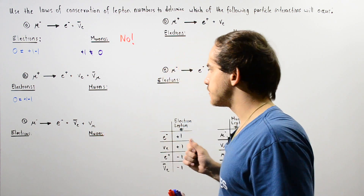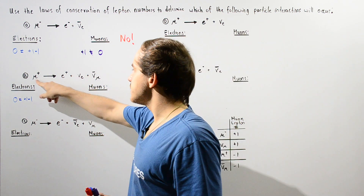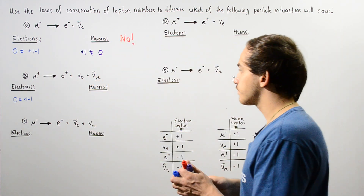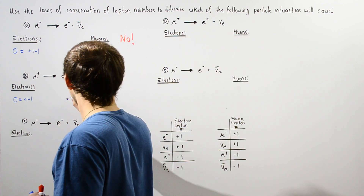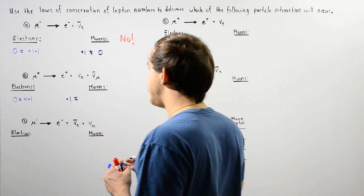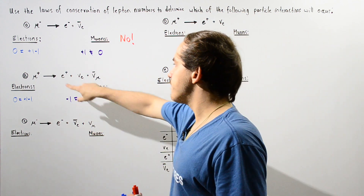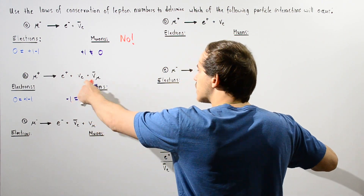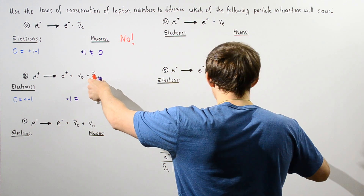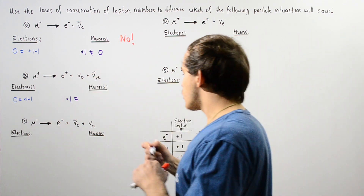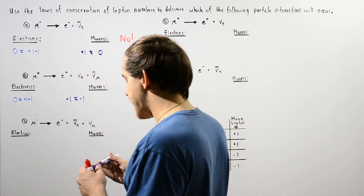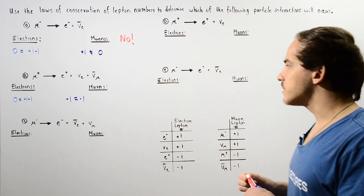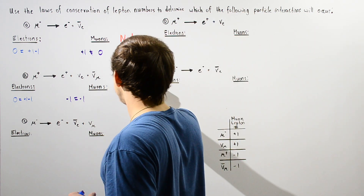What about the muon lepton number for reaction B? On the left side, we have an anti-muon which gets negative one. On the right side, the positron gets zero, the electron neutrino gets zero, and the muon anti-neutrino gets negative one. Negative one equals negative one, so both lepton numbers are conserved, and reaction B does, in fact, take place.